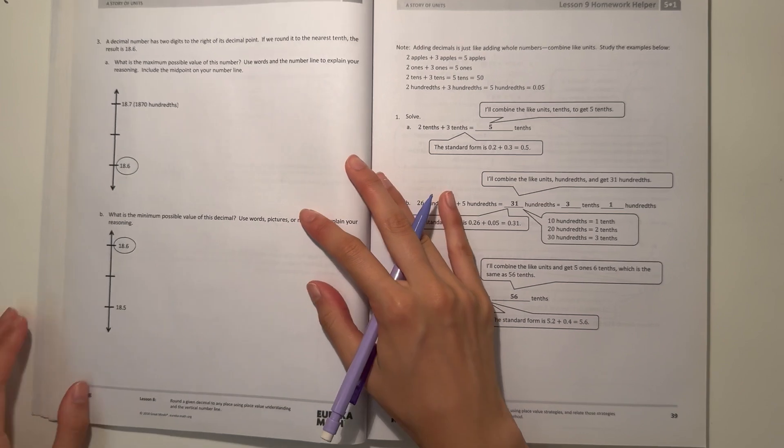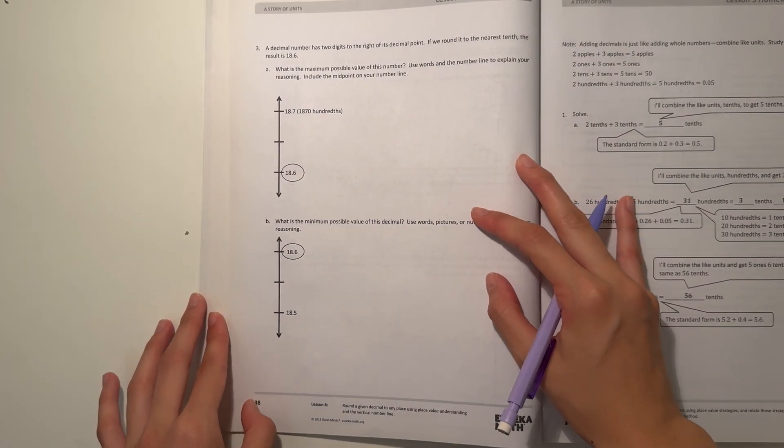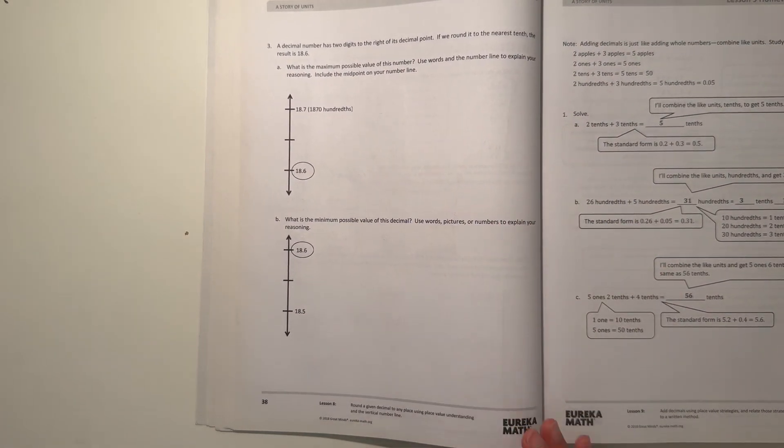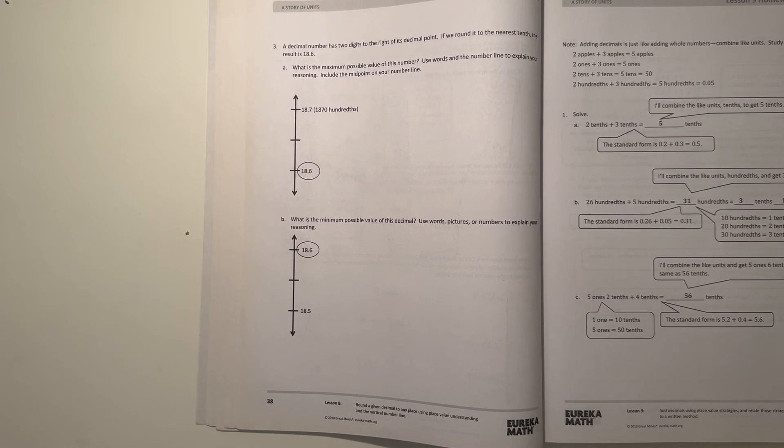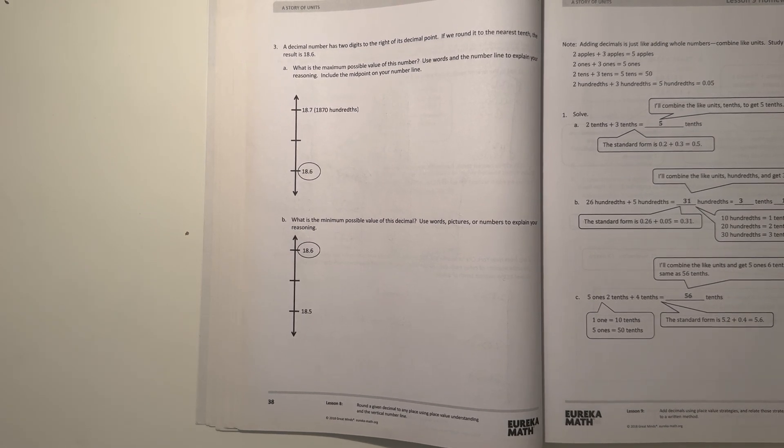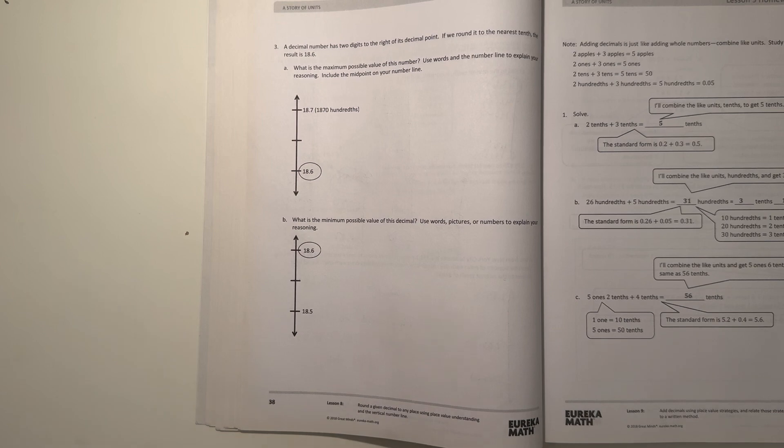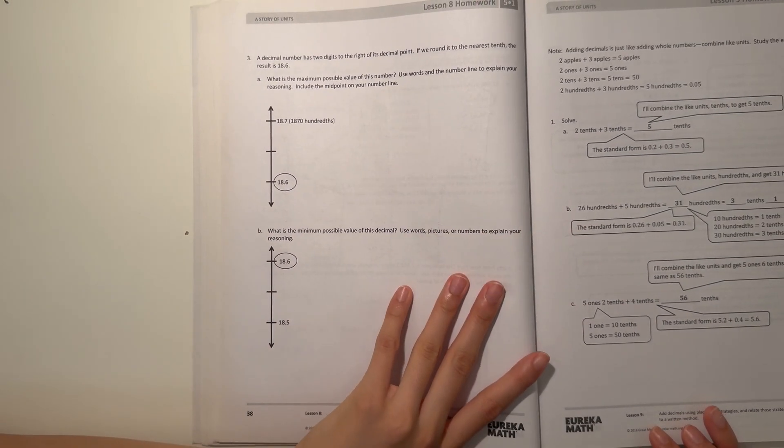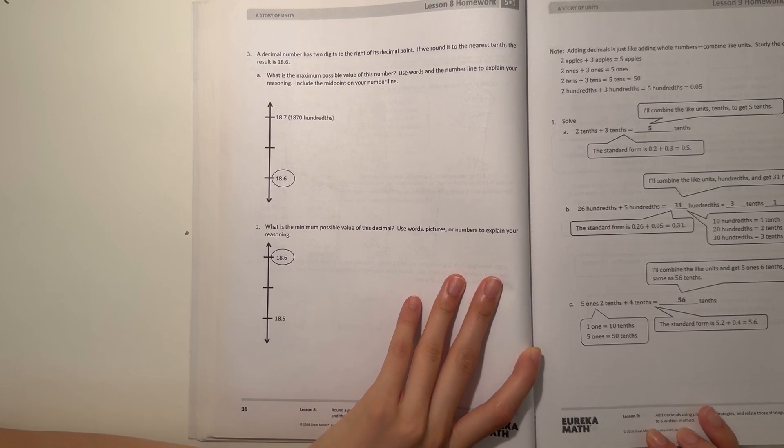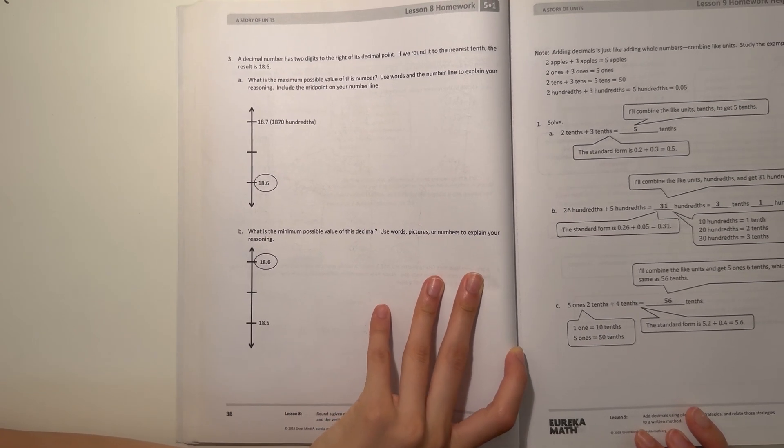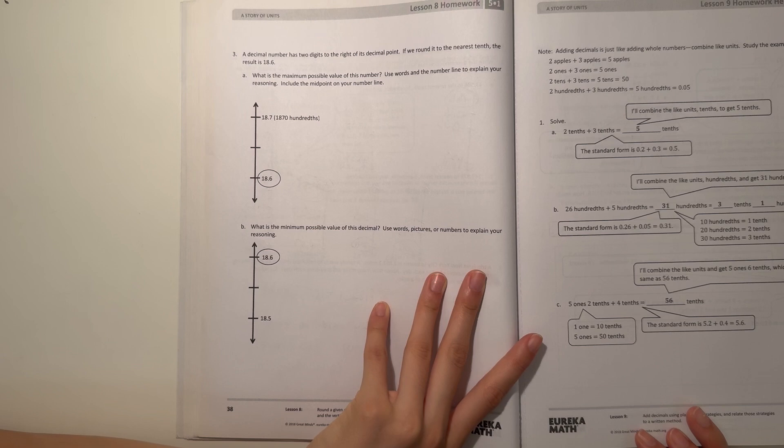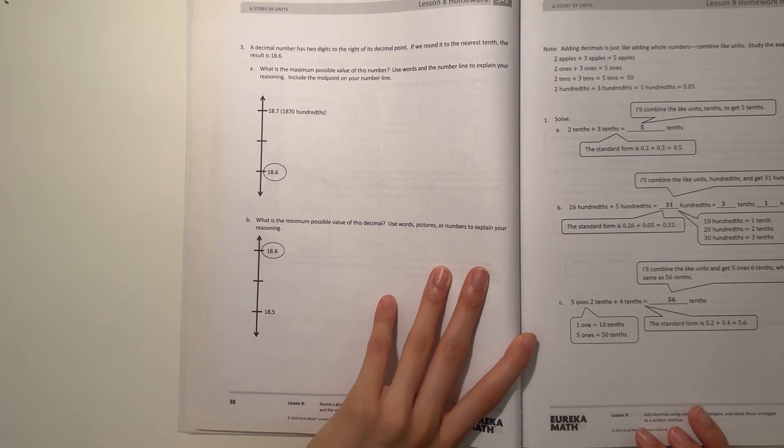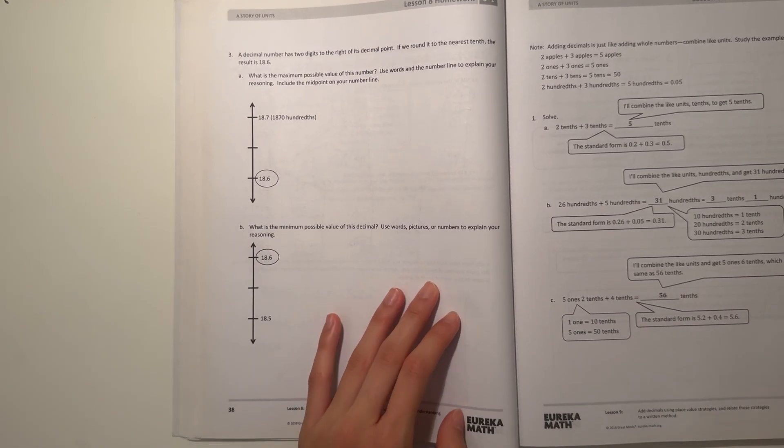All right, next page. Number three. A decimal number has two digits to the right of its decimal. So that means it's up to the hundredth place. If we round it to the nearest tenth, the result is 18.6. What is the maximum possible value of this number? Use words and number line to explain your reasoning. Include the midpoint on your number line. So we're at 18.6.